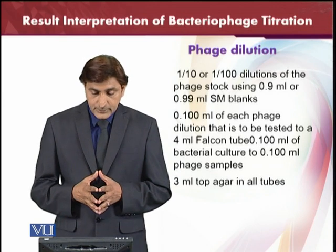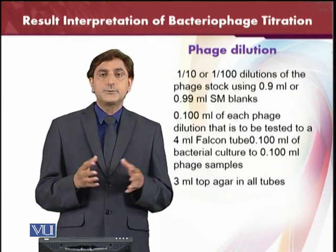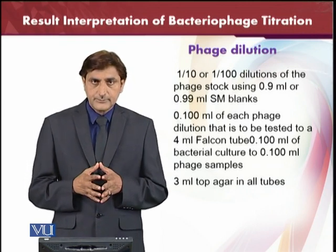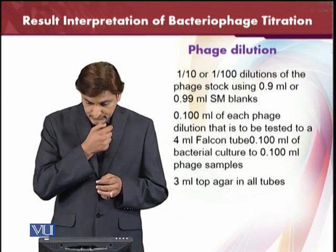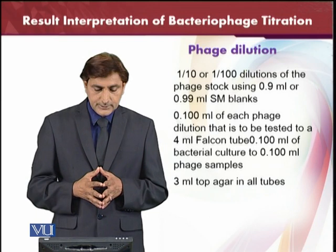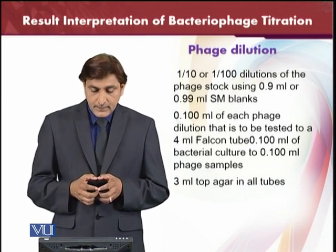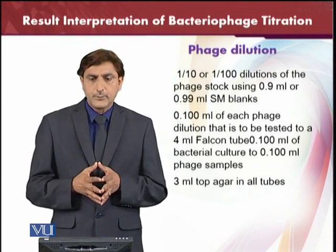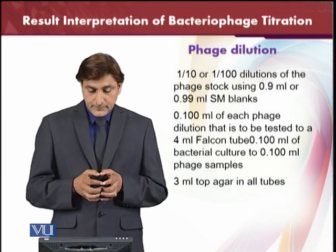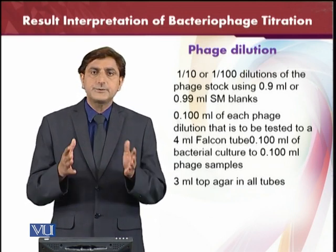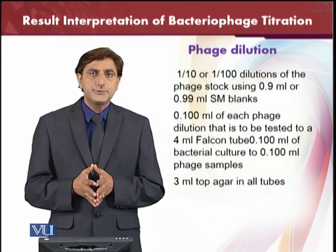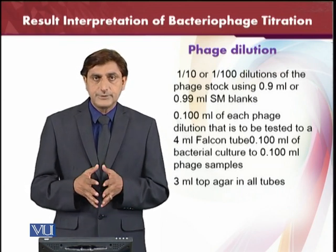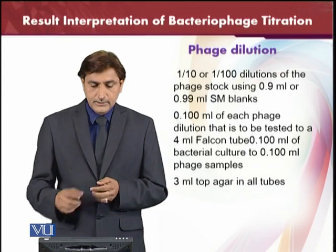1 into 10 and 1 into 100 dilutions of the phage stock are used, with 0.9 ml of SM medium used for serial dilutions. Then 0.1 ml of each dilution is tested in a 4 ml falcon tube, along with 0.1 ml of the bacterial culture. Then 3 ml of top agar is added. This is an overview of the procedure and the phage dilutions used for results interpretation of the bacteriophage titration.